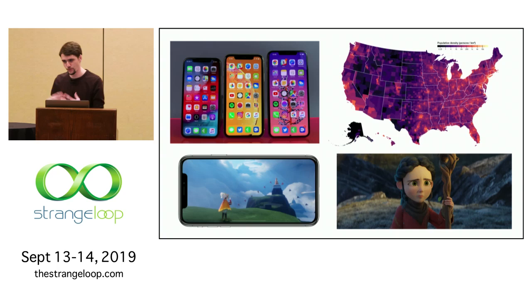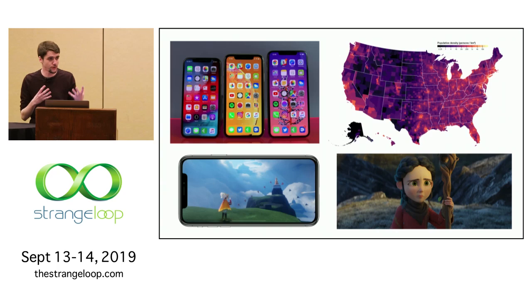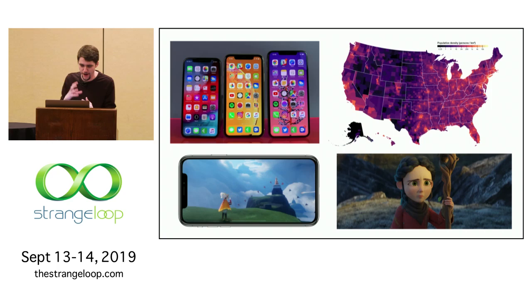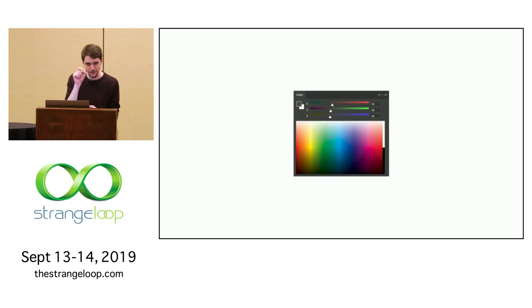In today's world, color is just everywhere — in our images, the web, our books, our clothing. When you want to make a new piece of clothing, you need to know what color to dye it; somebody has to tell you what color to make. And in this crazy world of color, we must have these fantastically complex systems to manage it. But most of us probably just eyeball the sliders until it looks about right.